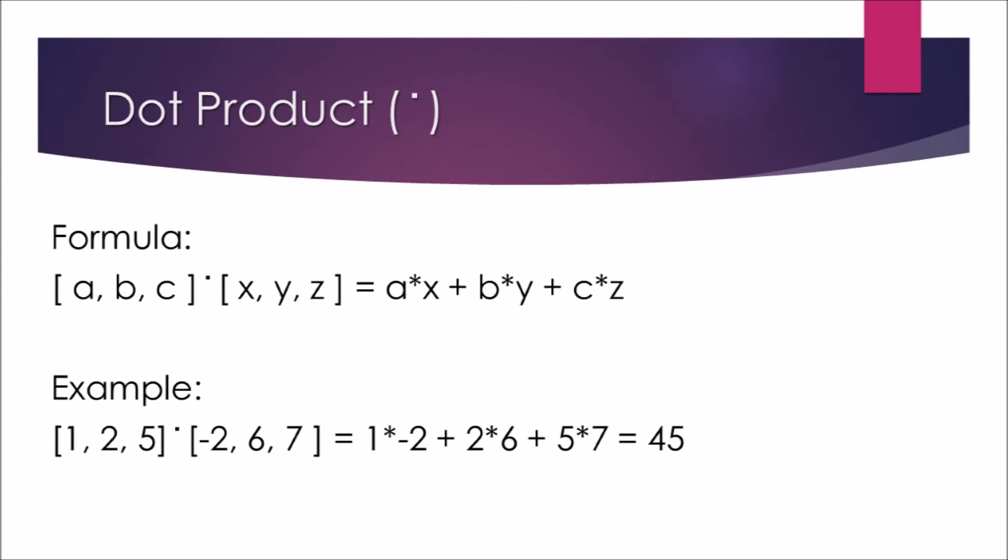As an example, find the dot product of two vectors, one with the elements 1, 2, and 5, the other with the elements -2, 6, and 7. The dot product is calculated as 1*-2 + 2*6 + 5*7 for the result of 45.